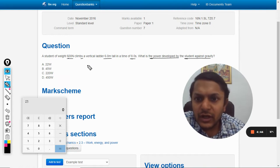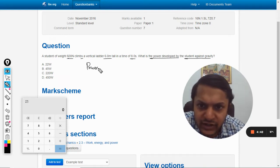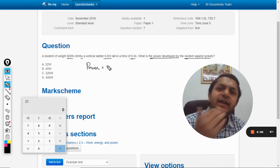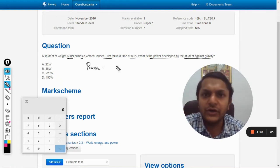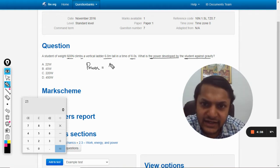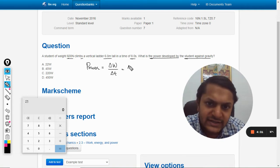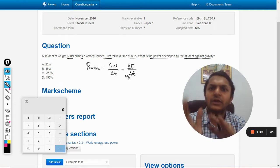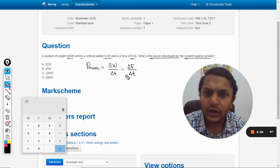So, we know that power is defined as a rate of change of energy or rate of doing work. We can say that it is delta W divided by delta T, or you can say it is delta energy divided by delta T, or whichever form you want.